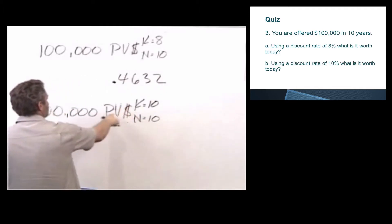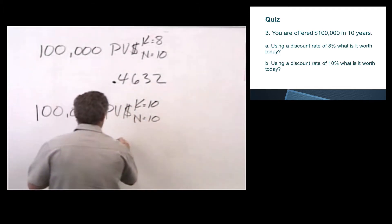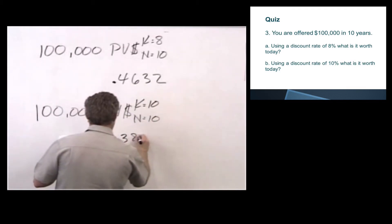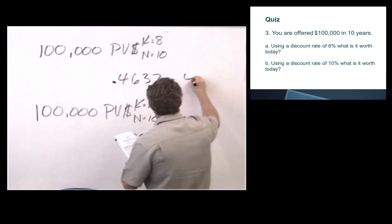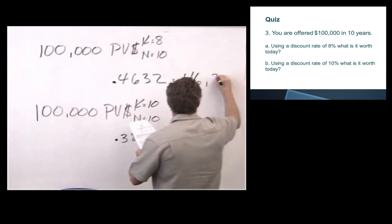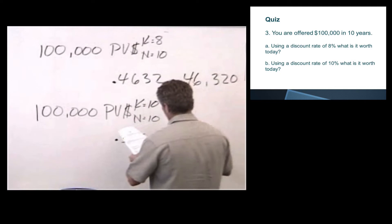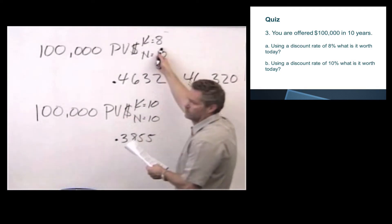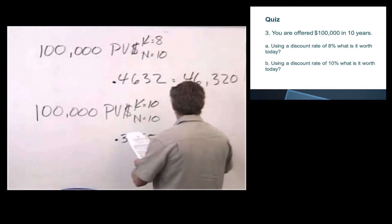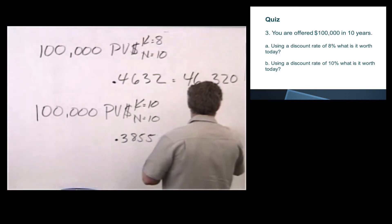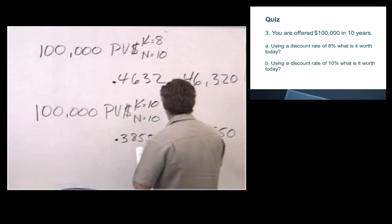And at present value of $1, K equals 10, N equals 10, that factor is .3855. We multiply that across. We get $46,320 for the present value under an 8% scenario, and under 10%, we get a value of $38,550.